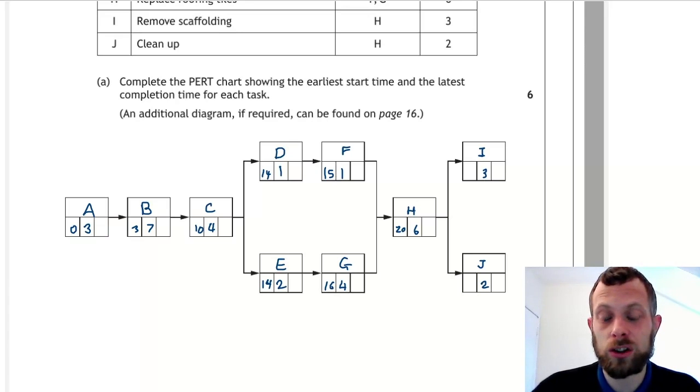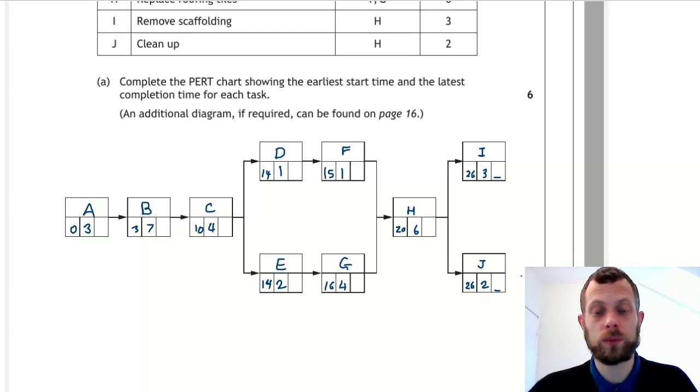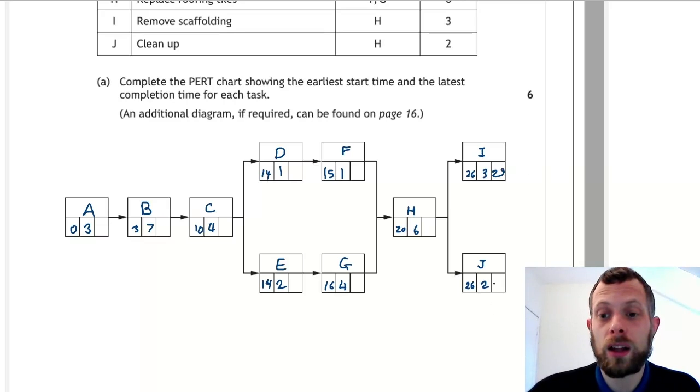So task H cannot start until 20 hours at the earliest. 20 plus six will be 26, and that will go in both of these boxes. Now we're going to do the backward scan. It's important to remember that we need to have the same number in both of these end boxes. 26 plus three is 29, 26 plus two is 28. We choose the later of these two, which is 29.